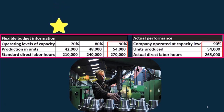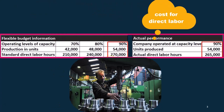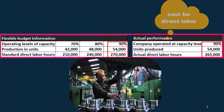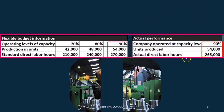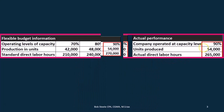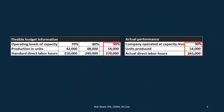We're going to look at the cost for direct labor with regards to the production level — in this case, 90% capacity and 270,000 hours, because that's what we produced at 90% capacity.